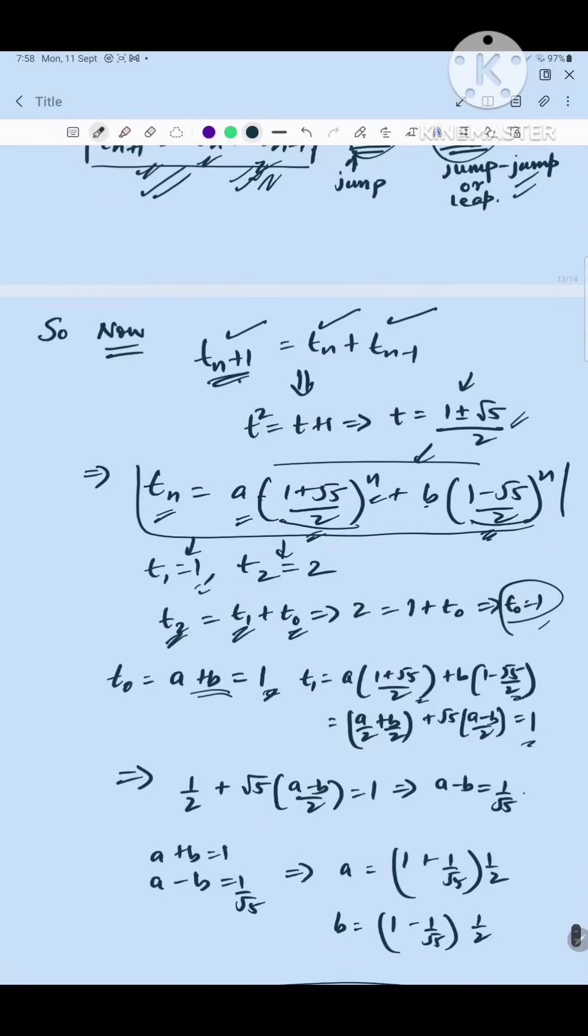So what I did is I said okay let's make it a/2 plus b/2 plus √5/2(a - b), so plus √5/2(a - b) is equal to 1. And what is a plus b? 1 from t_0 we have calculated, so a plus b is 1, so this number becomes half. So half plus √5/2(a - b) is equal to 1, so a minus b is 1/√5.